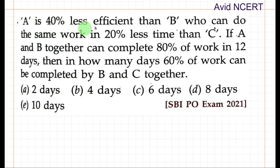From the first point, A is 40% less efficient than B. So the efficiency ratio of A to B: since A is 40% less efficient, if B does 100, then A does 100 minus 40 which is 60. So the efficiency ratio A to B is 60 to 100, which simplifies to 3 to 5.